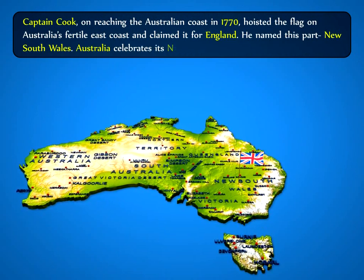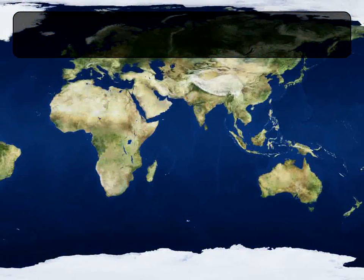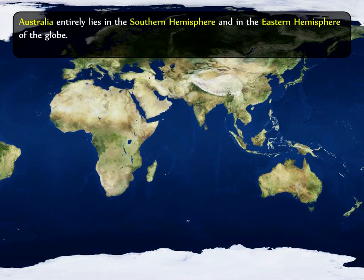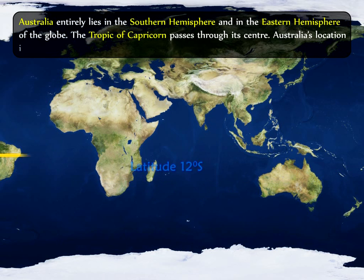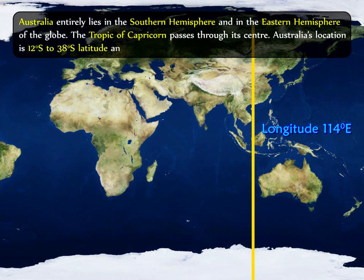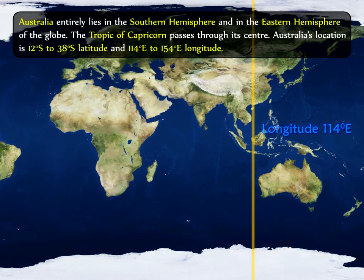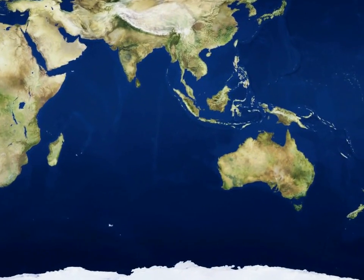Australia celebrates its national day on January 26th. Australia entirely lies in the Southern Hemisphere and in the Eastern Hemisphere of the globe. The Tropic of Capricorn passes through its centre. Australia's location is 12 degrees south to 38 degrees south latitude and 114 degrees east to 154 degrees east longitude. The island of Tasmania extends a little further south.